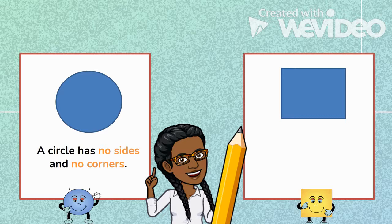Take a look at these two shapes. Look at the circle first. A circle has no sides and no corners.